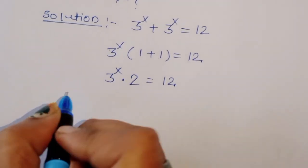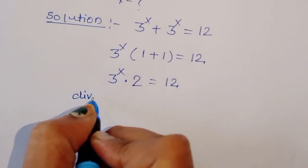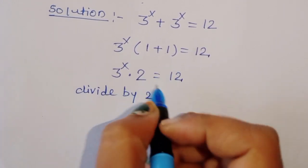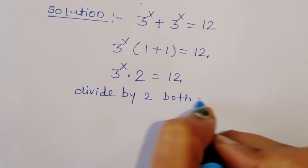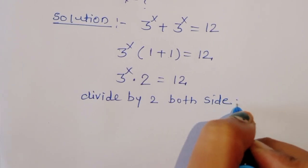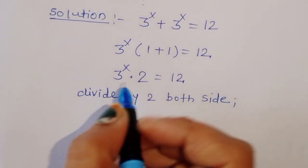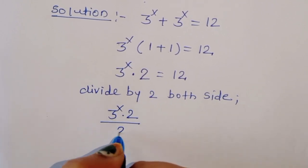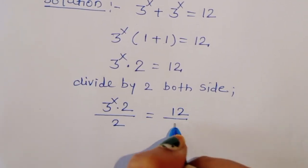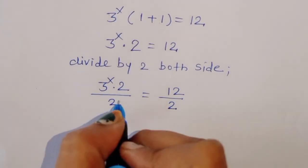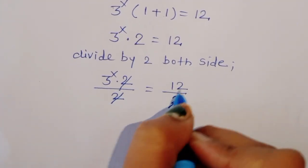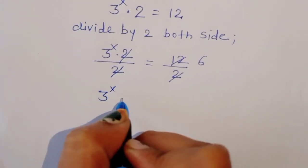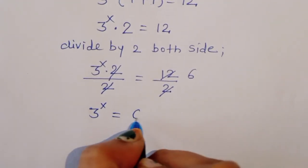Now we can divide both sides by 2. So 3 power x times 2 divided by 2 is equal to 12 divided by 2. This will cancel, so we can write 3 power x is equal to 6.